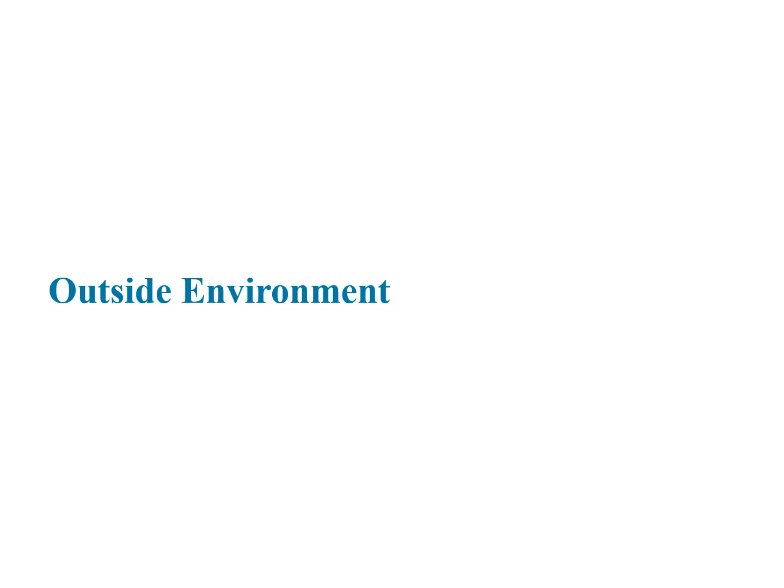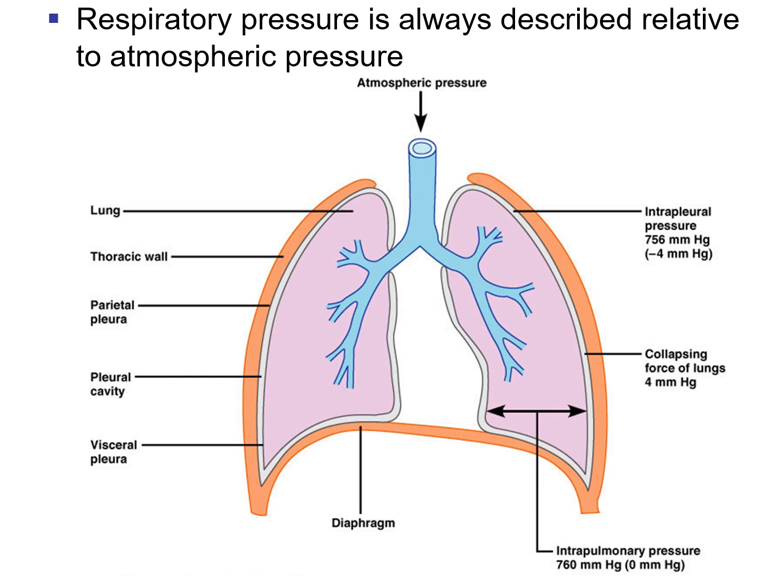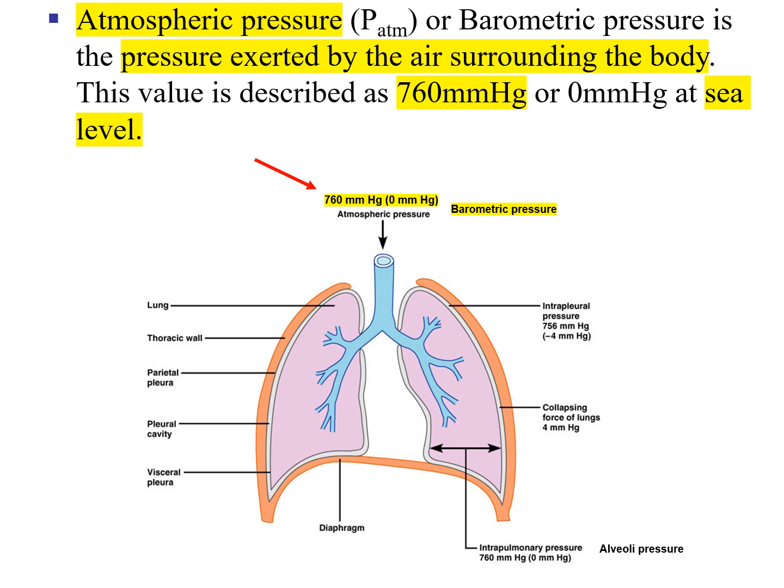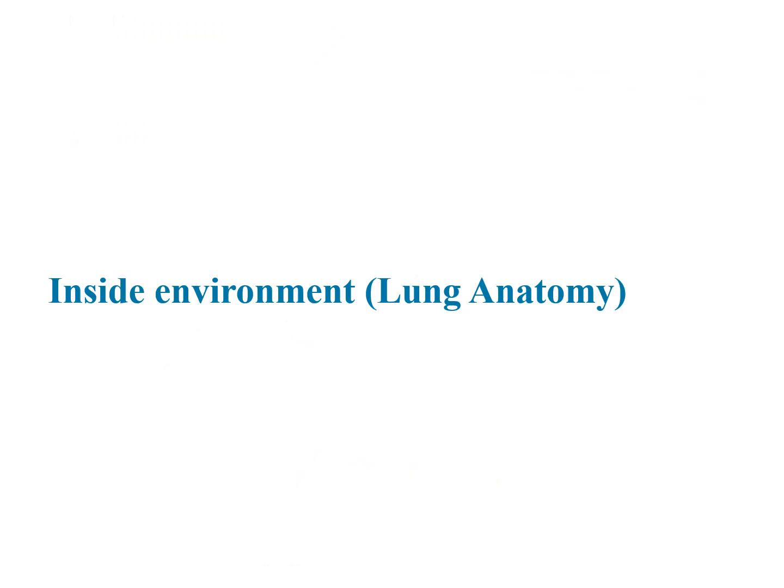Now we're going to cover the outside environment and the inside environment. Respiratory pressure is always described relative to atmospheric pressure. Atmospheric pressure, or barometric pressure, is the pressure exerted by the air surrounding the body. This has a value of 760 millimeters of mercury at sea level, also written as zero millimeters of mercury at sea level.